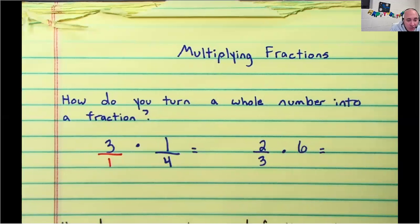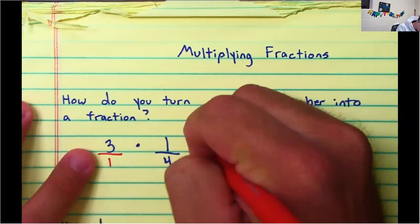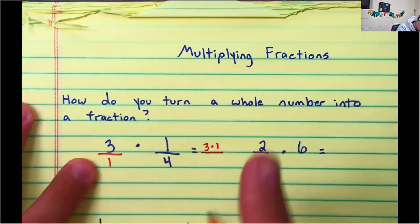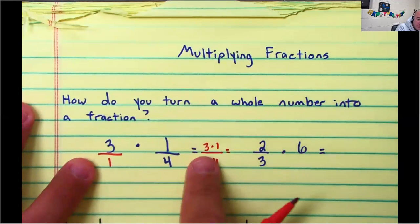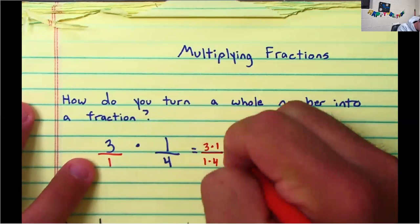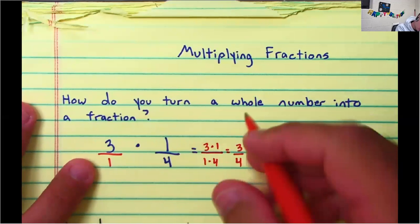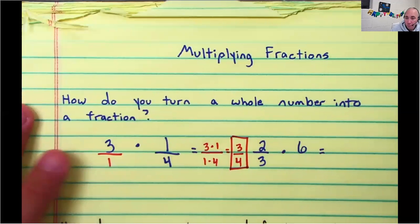Now, when you multiply fractions, you just multiply straight across. So this is like three times one over one times four. Three times one is three. One times four is four. Can three-fourths be simplified? Nope. You're done. That easy.